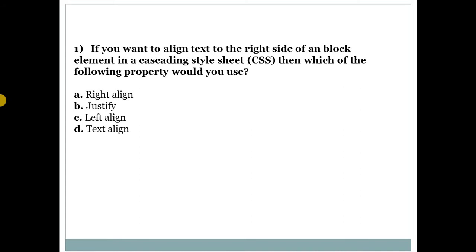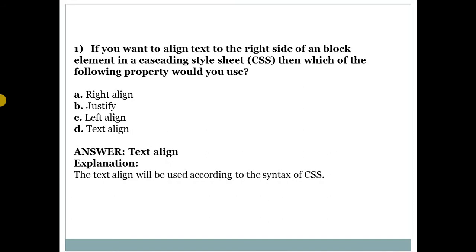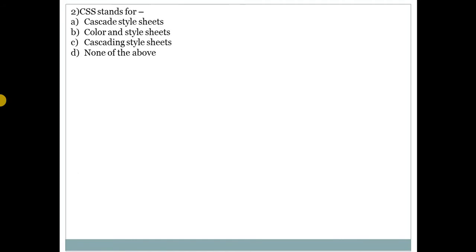First question: if you want to align text to the right side of a block element in CSS, which property would you use? Answer is D — text-align. The text-align property is used to align the text.